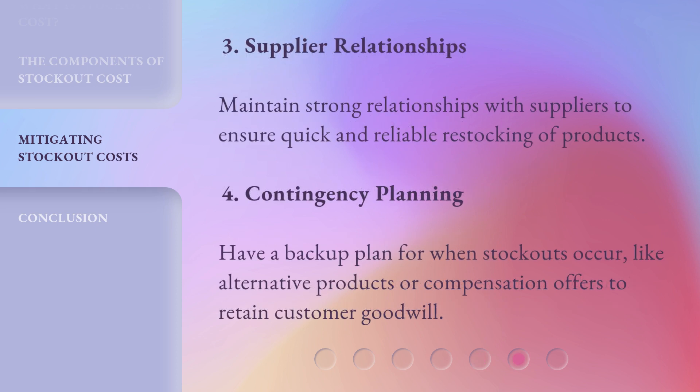3. Supplier relationships: Maintain strong relationships with suppliers to ensure quick and reliable restocking of products. 4. Contingency planning: Have a backup plan for when stockouts occur, like alternative products or compensation offers to retain customer goodwill.